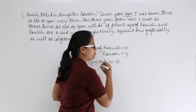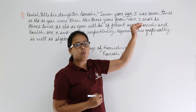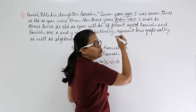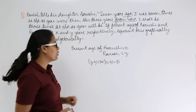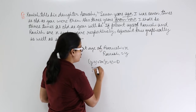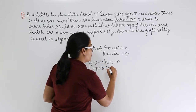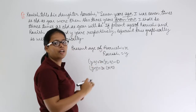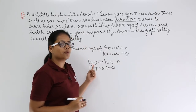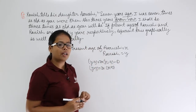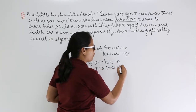So that is equation one. Now for the second statement: three years from now — which means we are talking about the future. Ravish shall be three times as old as Arushi will be. Age of Ravish becomes y plus three, and age of Arushi becomes x plus three. In equation one we used past values (minus seven), and here in equation two we use future values (plus three).